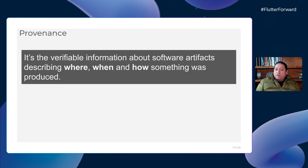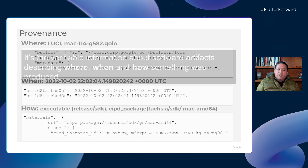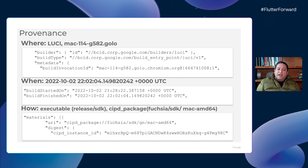Protecting from many of these threats requires documenting the builds in a verifiable form, including when, where, and how the software was produced. This verifiable form is called provenance. It is usually a JSON file describing the machine used to build the packages, the start and end timestamps of the build, and the materials used during the builds. These are portions of the Dart provenance file. We can see Lucy and Mac 114 as the machine used to build in the 'where' section, the start and end timestamps in the 'when' section, and a list of packages and binaries in the 'how' section.